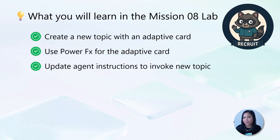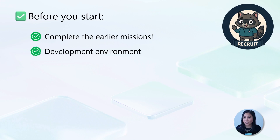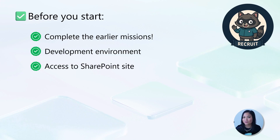In today's lab, we're going to add a topic with an adaptive card that allows users to select from a list of choices and submit the response. We'll use PowerFX to display data from a SharePoint list, and lastly update the agent instructions to invoke the new topic. The end result is a topic that can handle device requests from users through an adaptive card. Before we begin, make sure you've already completed the earlier missions — you'll need a dedicated development environment and access to the SharePoint site created in the core setup mission.